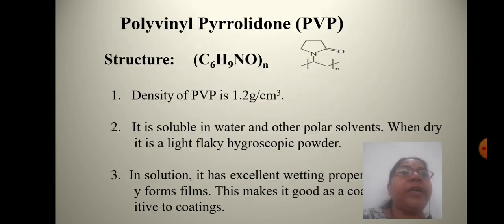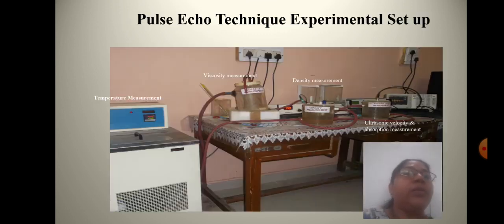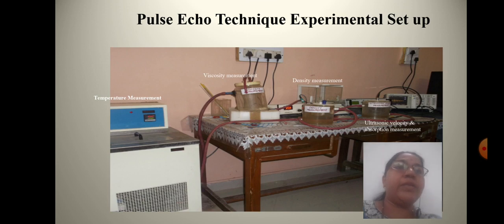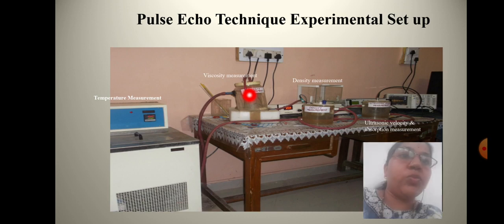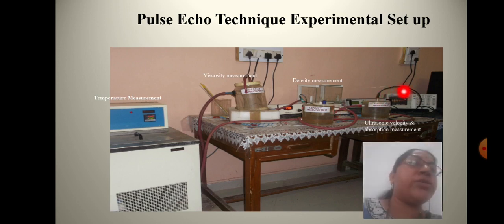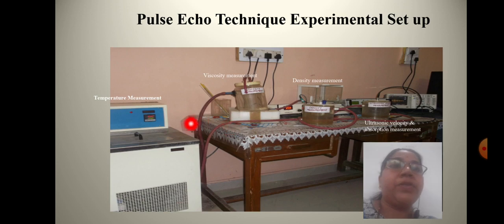Then PVP, that is polyvinyl pyrrolidone, with formula C6H9NO. To study the ultrasonic parameters, I used the pulse echo technique as my experimental technique. Viscosity measurement was done using an Oswald viscometer, density measurement by the pycnometer method, and velocity was measured using an MHF 400 ultrasonic pulsar receiver. The temperature range was maintained using a plastograph thermostat.